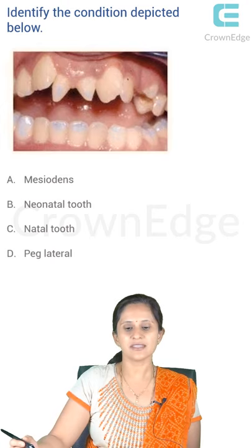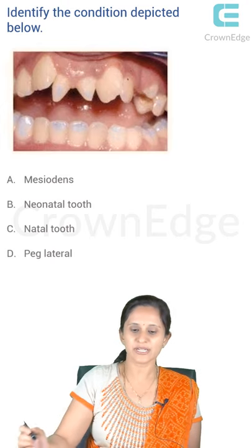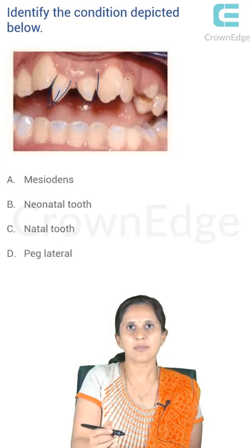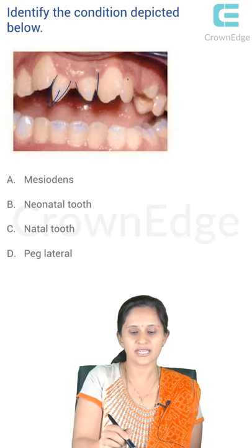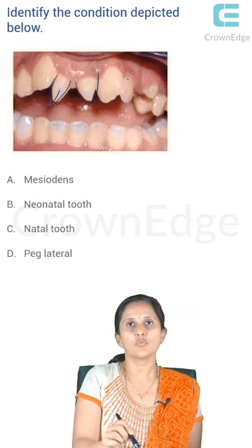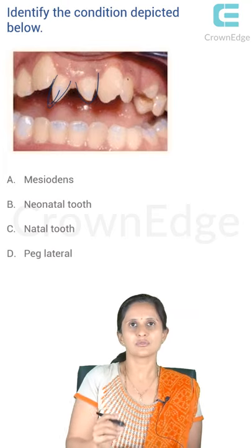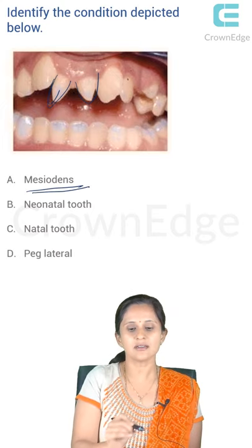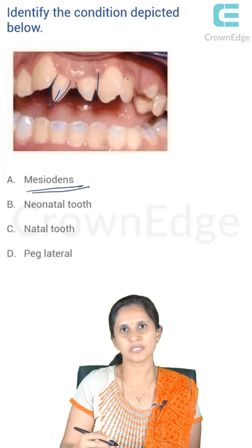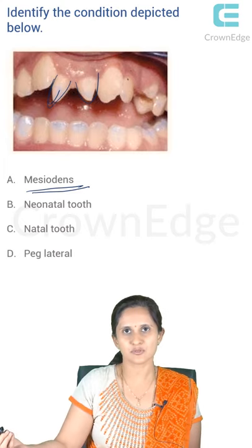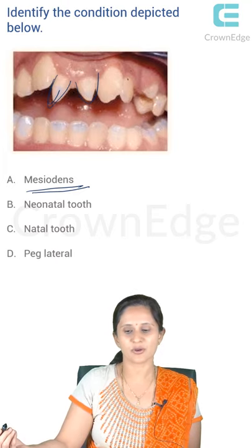Next question: identify the condition depicted below. It is straightforward — you can see two supernumerary teeth in a cone shape, present in the midline and drifting the permanent teeth aside. This is the feature of a mesiodens. Mesiodens are supernumerary teeth; other types include tuberculate teeth, paramolars, and distomolars. The picture clearly shows a mesiodens.